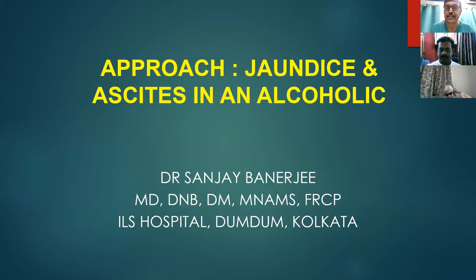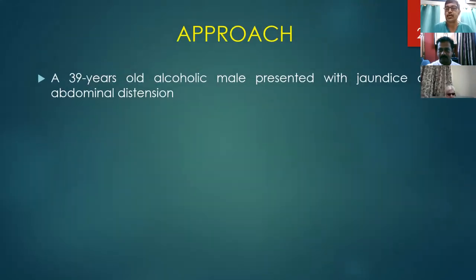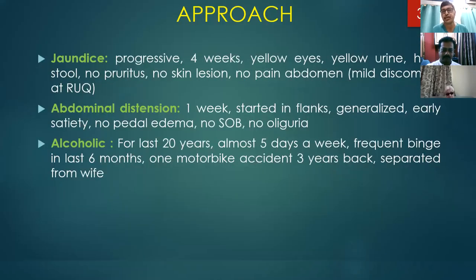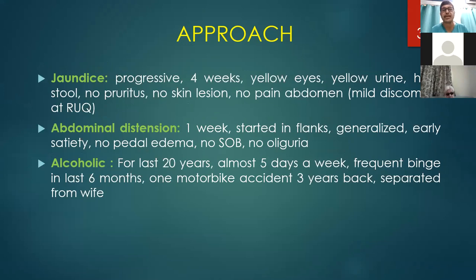My topic is alcoholic liver disease. When a patient presents with jaundice and ascites, I will present a hypothetical case to explore the different facets of alcoholic liver disease. A 39-year-old alcoholic male presented with jaundice and abdominal distension. The jaundice was progressive over four weeks with yellow urine and yellow eyes, no white-colored stool, no pruritus, no skin lesion, and only mild discomfort in the right upper quadrant.